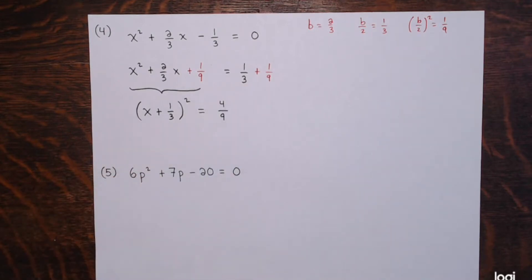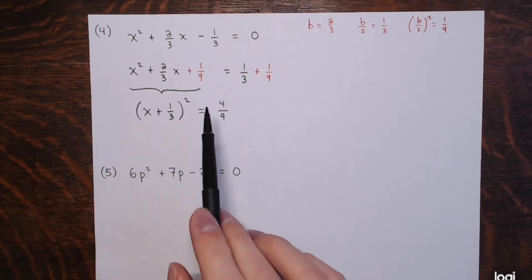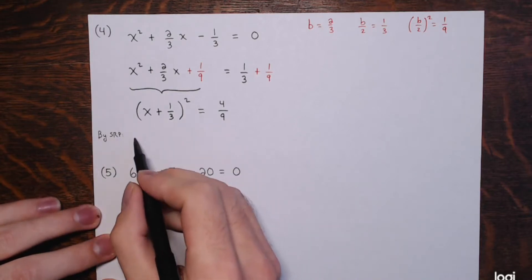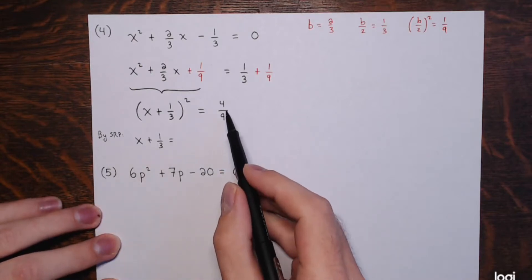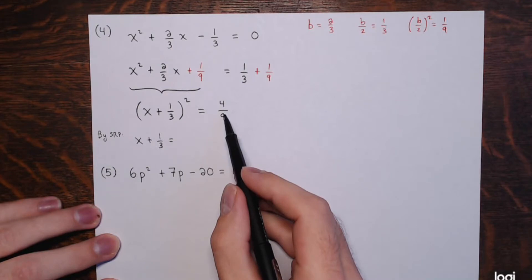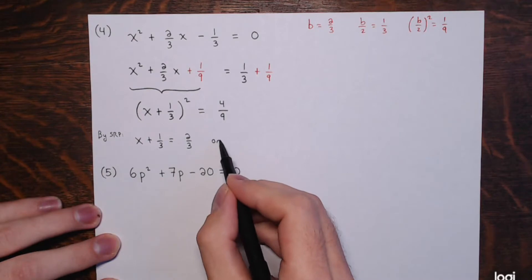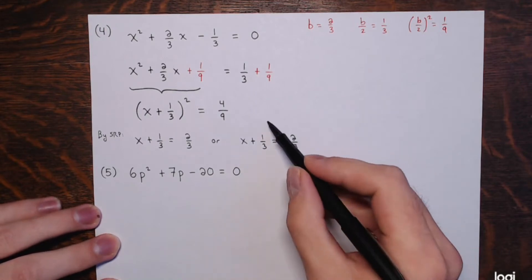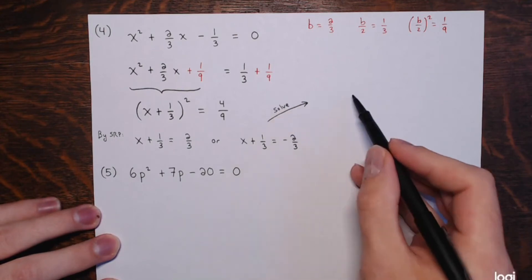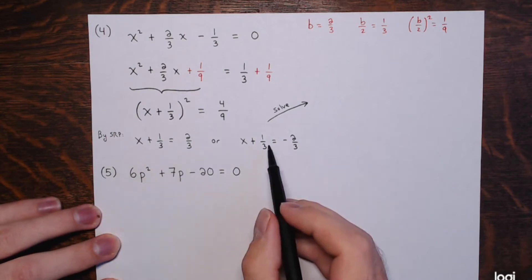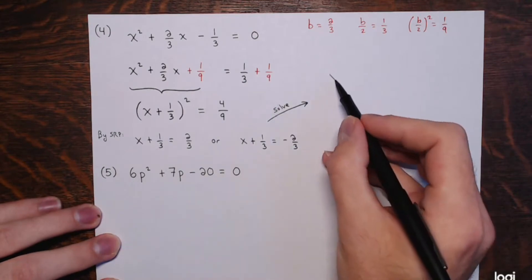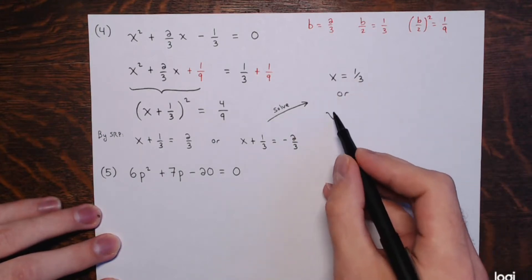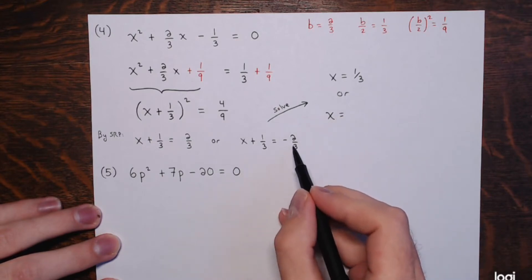Applying the SRP: √(4/9) = 2/3. So x + 1/3 = 2/3 or x + 1/3 = -2/3. Subtracting 1/3 from both sides: x = 2/3 - 1/3 = 1/3, or x = -2/3 - 1/3 = -3/3 = -1.